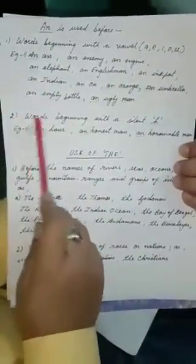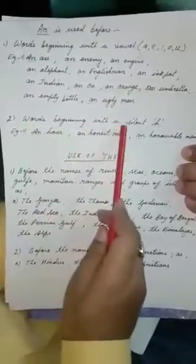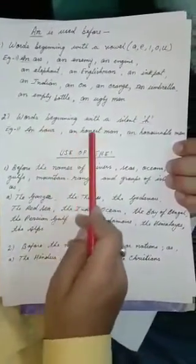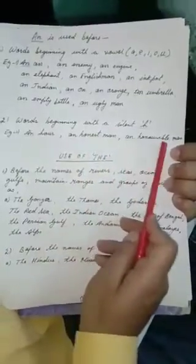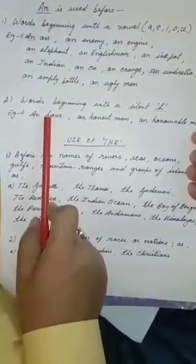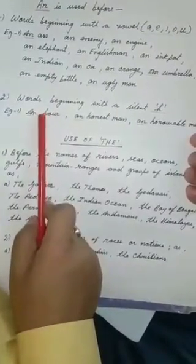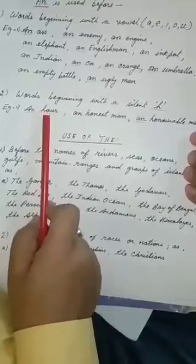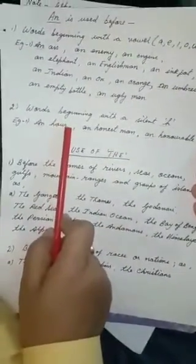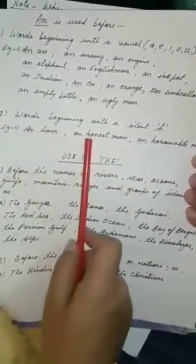Number second, words beginning with a silent H. An hour, an honest man, an honorable man. Here I am given AN, but you can see consonant over here. But H over here is silent. Our sound is coming, it is matching with the vowel, so I have to put AN.